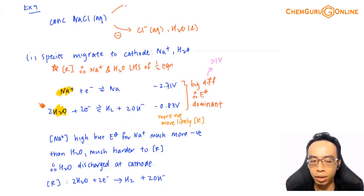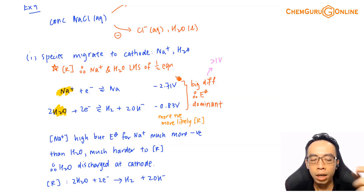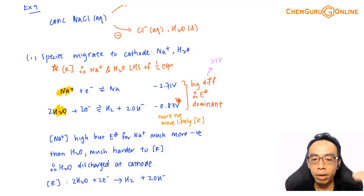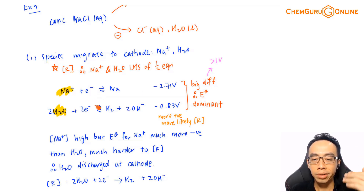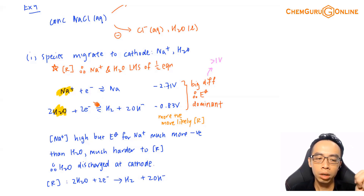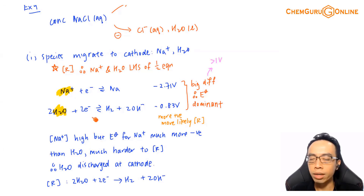These are the two half equations: reduction of Na⁺ at minus 2.71V, and reduction of water at minus 0.83V. Comparing these two, the E-value difference is very big — about 2V. This means Na⁺ is significantly harder to reduce compared to water. So even if Na⁺ has a very high concentration, it doesn't really matter — we still just compare E-values.